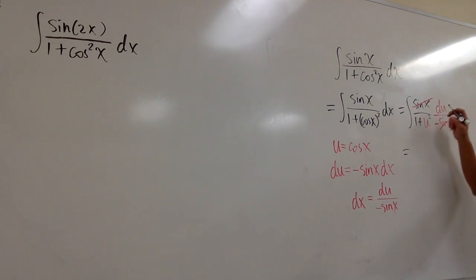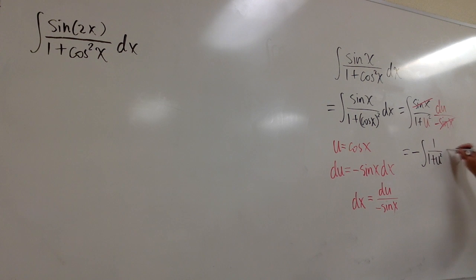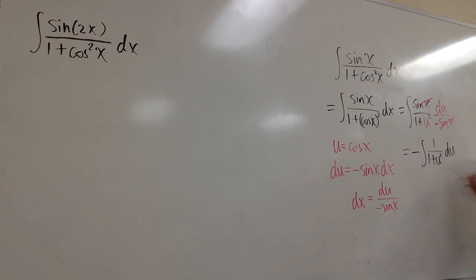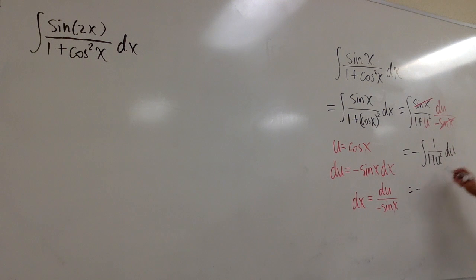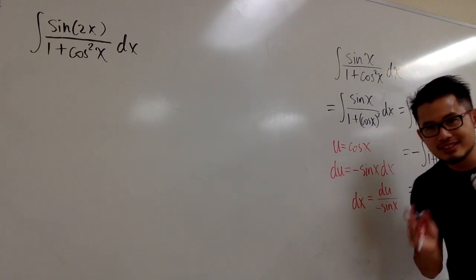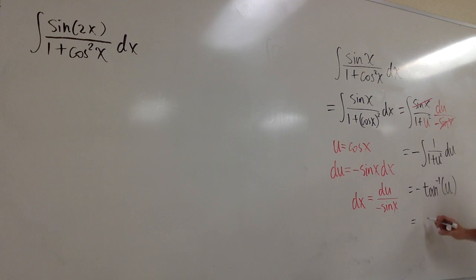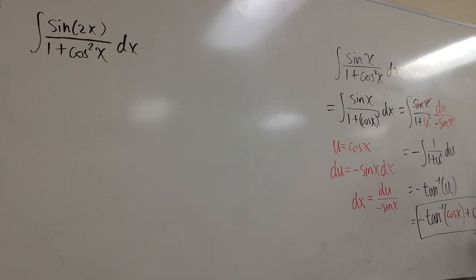We can totally integrate this. Let's pull out the negative sign first, giving us negative times the integral of 1 over 1 plus u squared du. The integral of 1 over 1 plus u squared is inverse tangent of u. So we have negative inverse tangent of u. We're not done yet — we need to bring the answer back to the x-world. Since u equals cosine x, the final answer is negative inverse tangent of cosine x plus C.